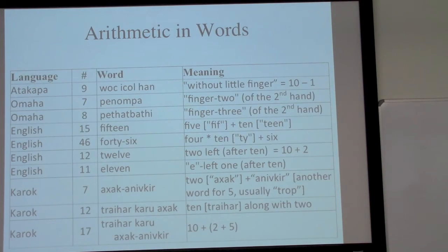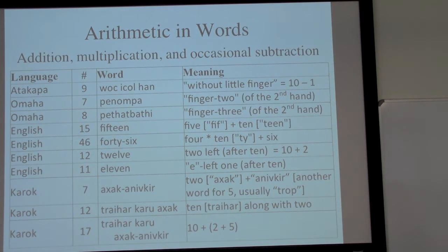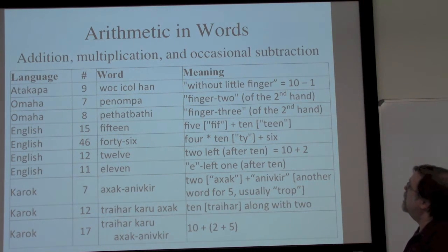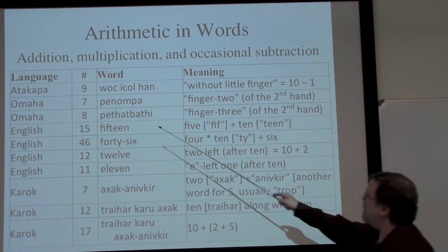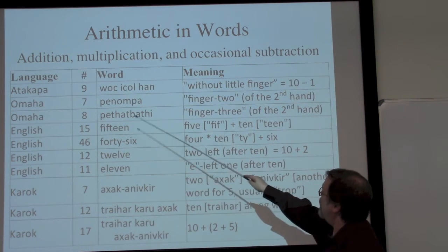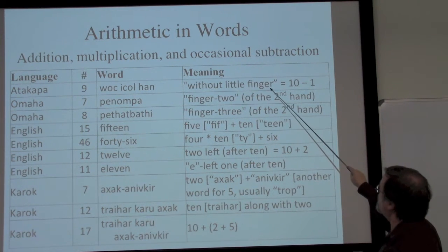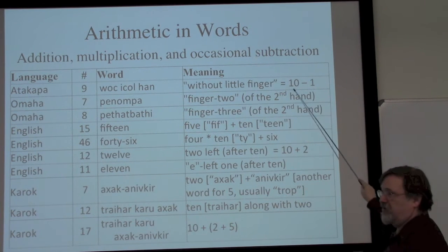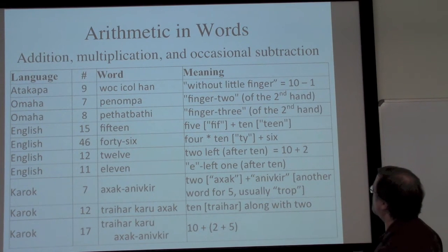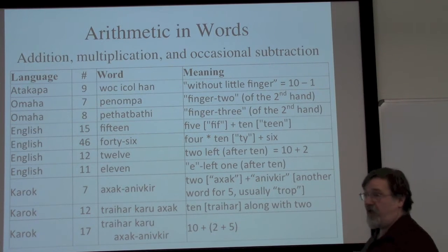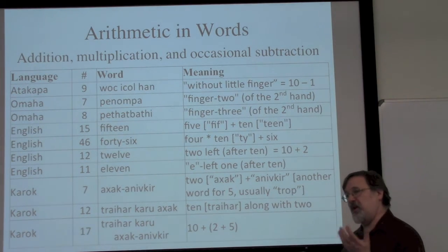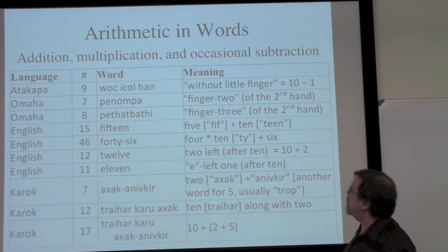We'll look at additional examples of arithmetic embedded in number words: addition, multiplication, and occasionally subtraction. The Atakapa word for nine translates as 'without the little finger' — everything except the little finger — essentially a subtraction: ten minus one. And again, that tells us something about how they're counting on their fingers.